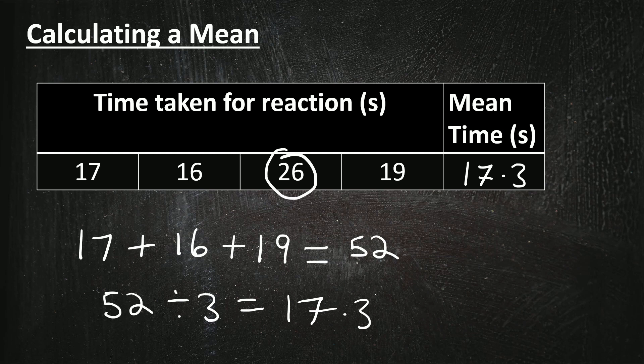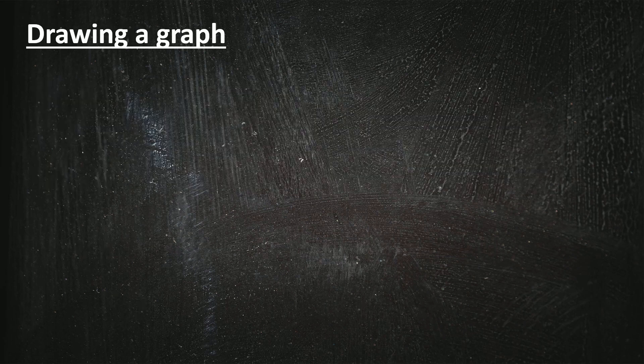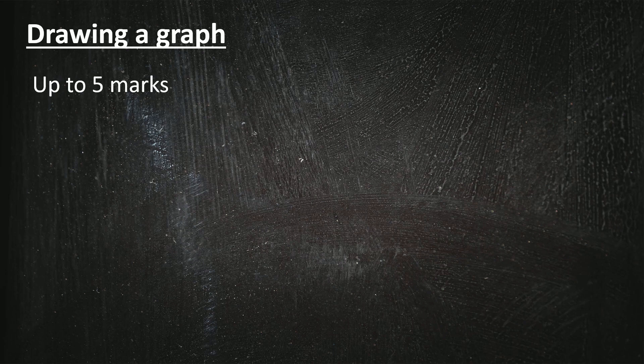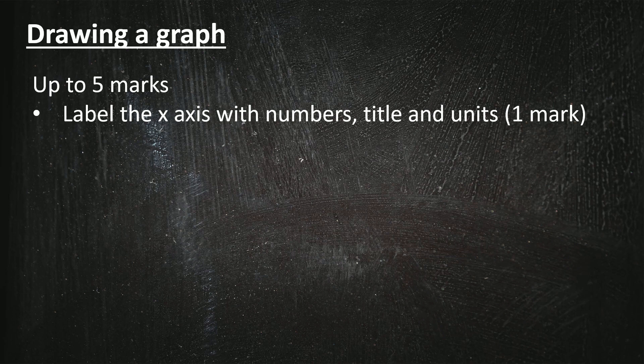If you're asked to draw a graph on your exam it could be worth up to five marks, and that could make a massive difference to your overall grade. So first of all we label the x-axis along the bottom with the numbers, and they need to go along in equal amounts, either 10, 20, 30, 40, 50 going along in tens, or you may go along in fifties or hundreds, for example. You need to do a title for that axis describing what it's showing and the unit, and all of that would get you one mark.